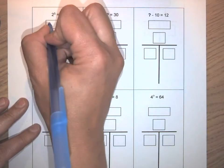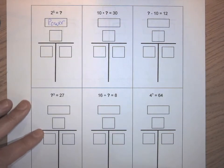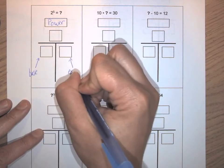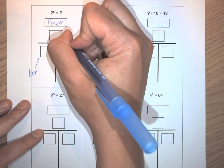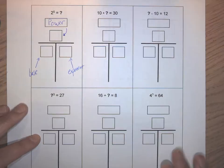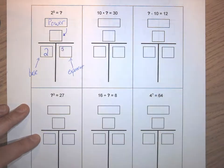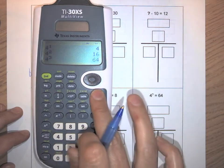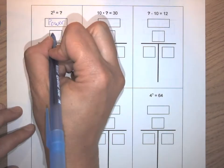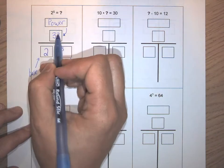I can see that I have an exponent, which means I have a power relationship. This is where we put the base, this is where the exponent goes, and this is the power right here. In this one, it's the power that I'm missing. So if I have a base of two and an exponent of five, that gives me 32 — that's my power, or the fifth power of two is 32.